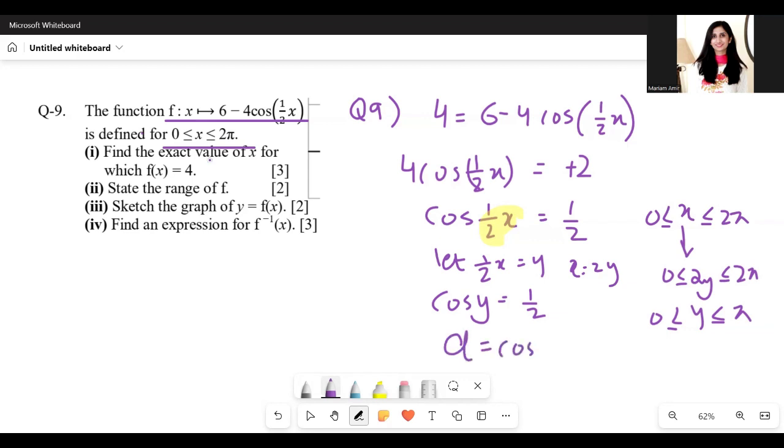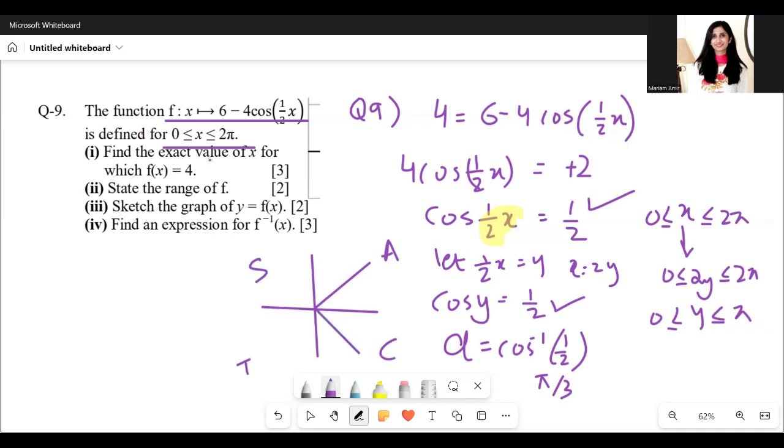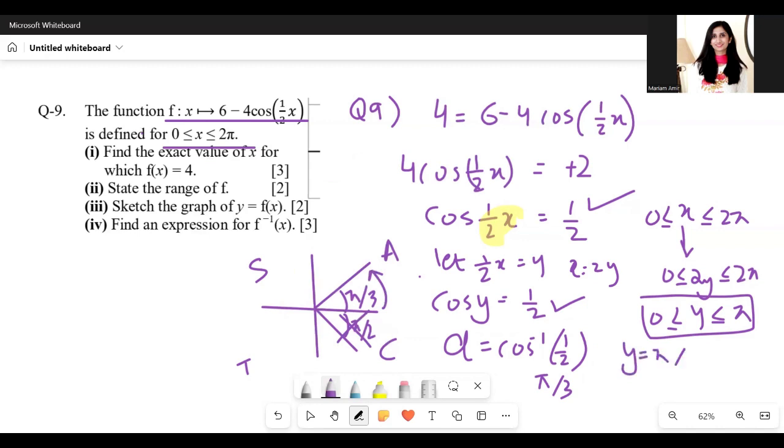I'm going to find the absolute angle first through cos inverse half, which gives pi by 3. Cos is positive in the first quadrant and the fourth quadrant. So we have pi by 3, but the domain is only from 0 to pi, so the fourth quadrant answer is not considered. The only value of y we're getting is pi by 3, and we know that x equals 2y. So x equals 2 pi by 3. That is the solution of part 1.